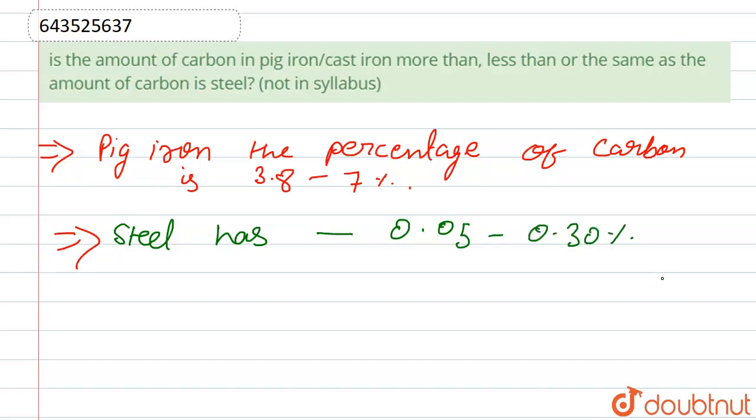Which makes it malleable and ductile. So the pig iron has a higher percentage of carbon than carbon in steel. Thank you.